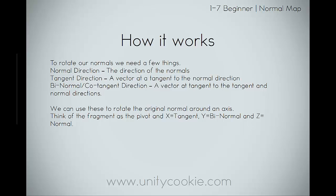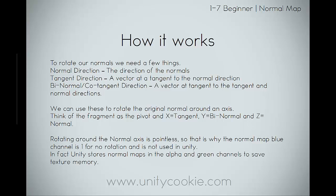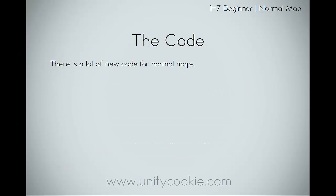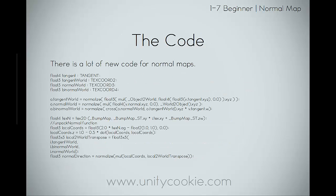You can think of the fragment as a pivot: X equals tangent, Y equals binormal, and Z equals normal. Rotating around the normal axis is pointless, so that's why the normal map's blue channel is 1 for no rotation and is not used in Unity at all. In fact, Unity stores normal maps in the alpha and green channels to save texture memory. There's a lot of new code for normal maps, so it's going to take a few pages — about 8 pages of breakdowns.